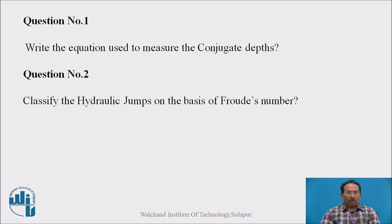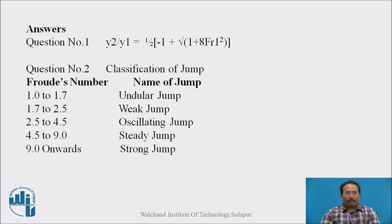Now these are the questions. Write the equation used to measure the conjugate depths. Conjugate depths, that is y2 and y1, or you can say sequent depths also. And second is classify the hydraulic jumps on the basis of Froude's number. Answer for the question number 1: y2 upon y1 is equal to 1 half into bracket minus 1 plus under root of 1 plus 8 Fr1 square.